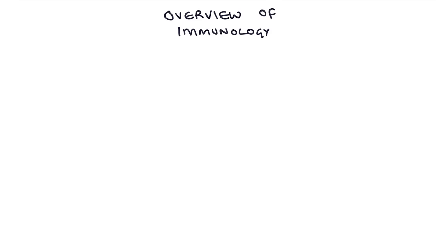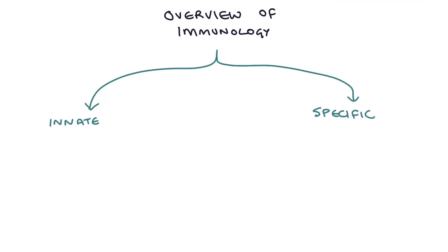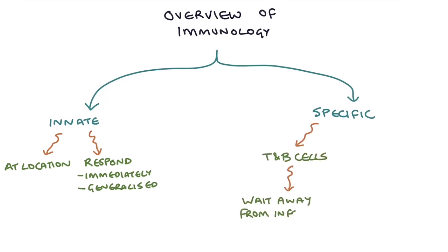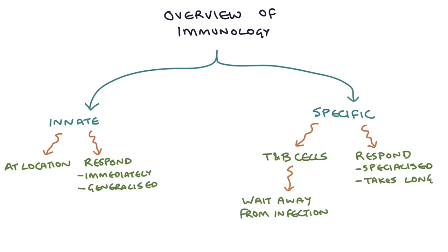The immune system can be categorized into the innate immune system and the specific immune system. The innate immune system consists of the components that are already at the location of the infection and respond immediately with a generalized response. The specific immune system involves specialized T and B cells that are waiting in places away from the site of infection, and when they're activated they launch a specialized system that fights the specific invading pathogen. The specific immune system takes a little while longer to recognize the infection, particularly when a pathogen is invading the body for the first time.